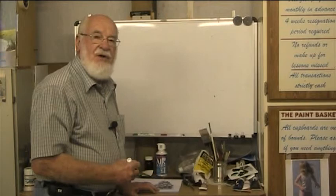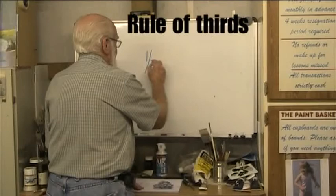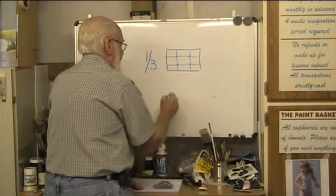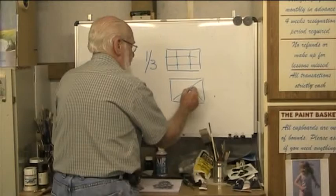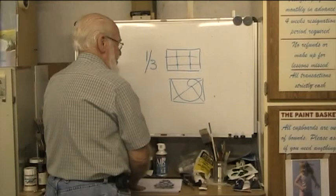Most artists only know of the rule of thirds and possibly the golden mean, but don't quite understand what they mean. They know the rule of thirds, where you divide your painting up into thirds and those are your focal points, or they perhaps know of the golden mean where your focal point is here — but that's about all they know, and this is quite often a mystery to them. But you can be ahead of them.